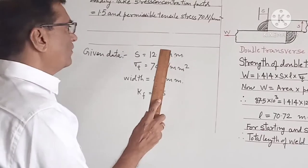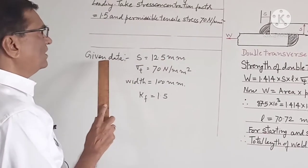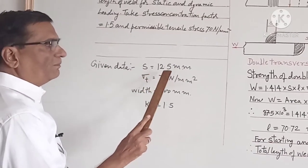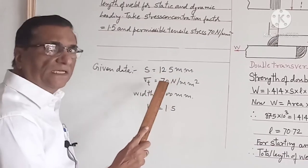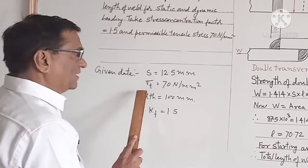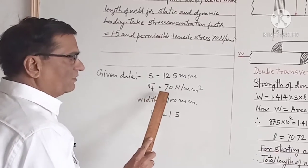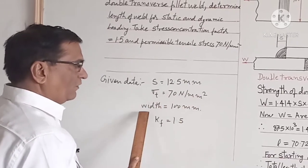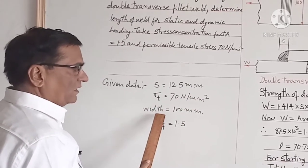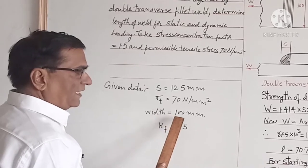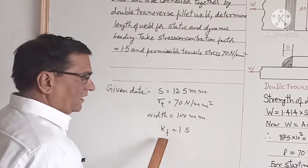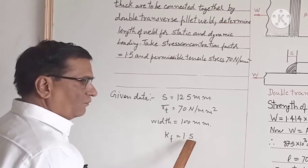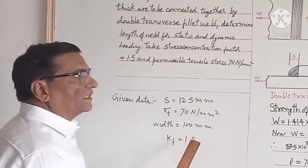First of all we write down the given data: S is equal to 12.5 mm, sigma T is equal to 70 N per mm square, width equal to 100 mm, Kf is equal to 1.5.